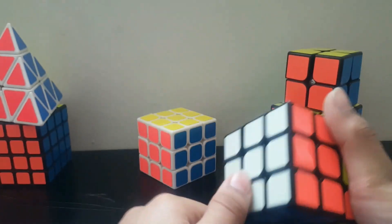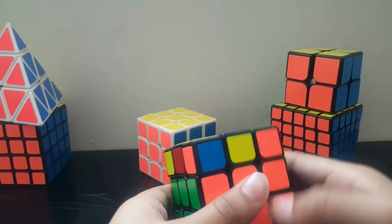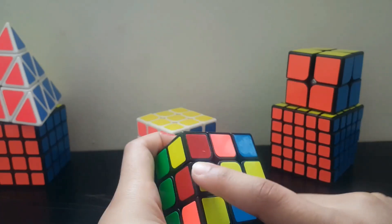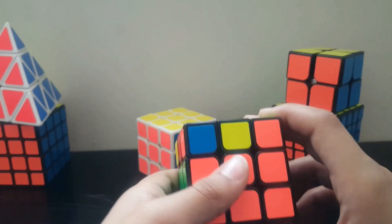Now we have completed solving the top layer and the middle layer. Now we have to do the bottom layer. So if you are getting the yellow piece like a line, then you have to do this algorithm just one time.